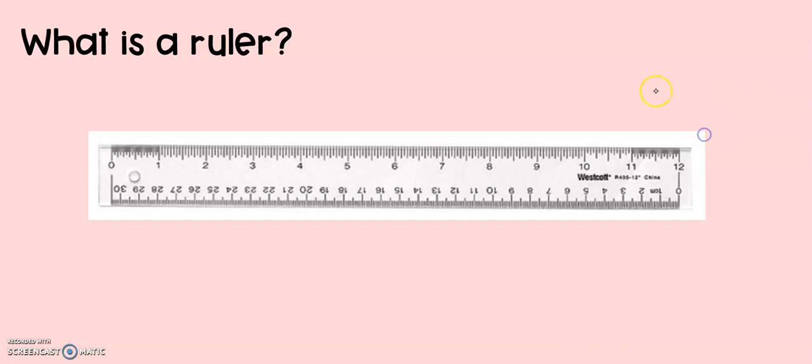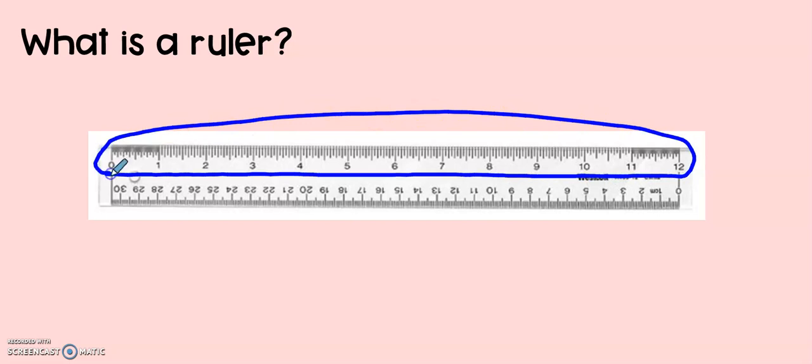If you take a look at the ruler on the screen, you will probably notice that both sides of the ruler have different numbers. On the top of our ruler, we have the numbers that go from zero all the way up to the number 12. Inches are a very common way to measure. On a standard ruler, I can measure something that can go all the way up to 12 inches.